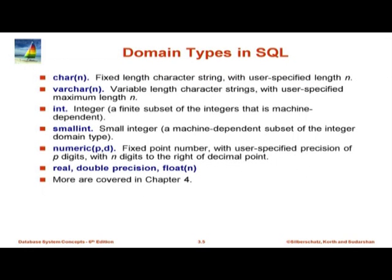Now let us start with the type system in SQL. Any real language needs to deal with types. In relational algebra we ignore types, but in the real world we have to deal with them. So SQL has several basic types — there are many more but I have shown just a few. There is char, and then there is varchar. Varchar is simply a variable length string.